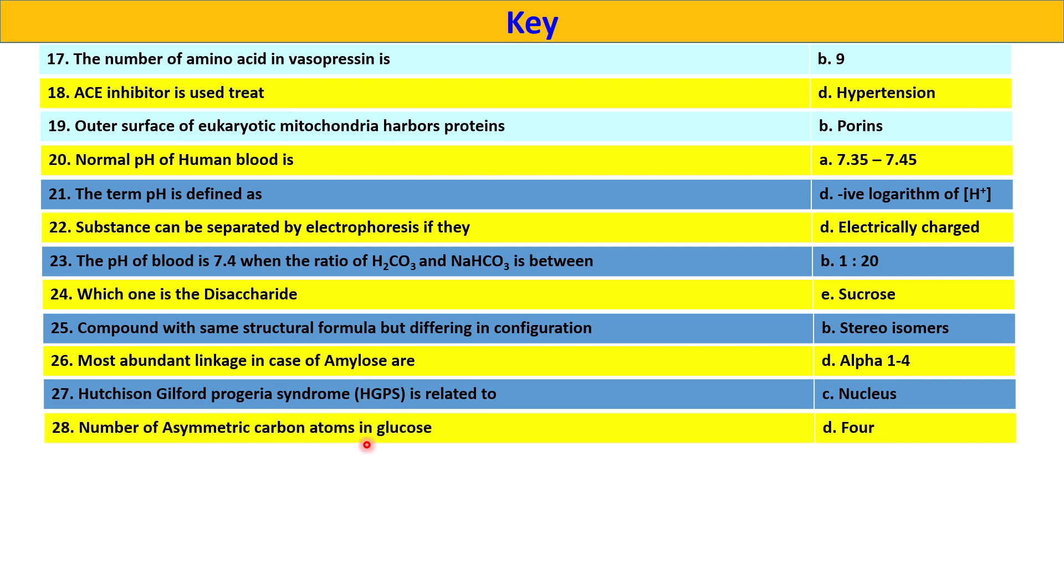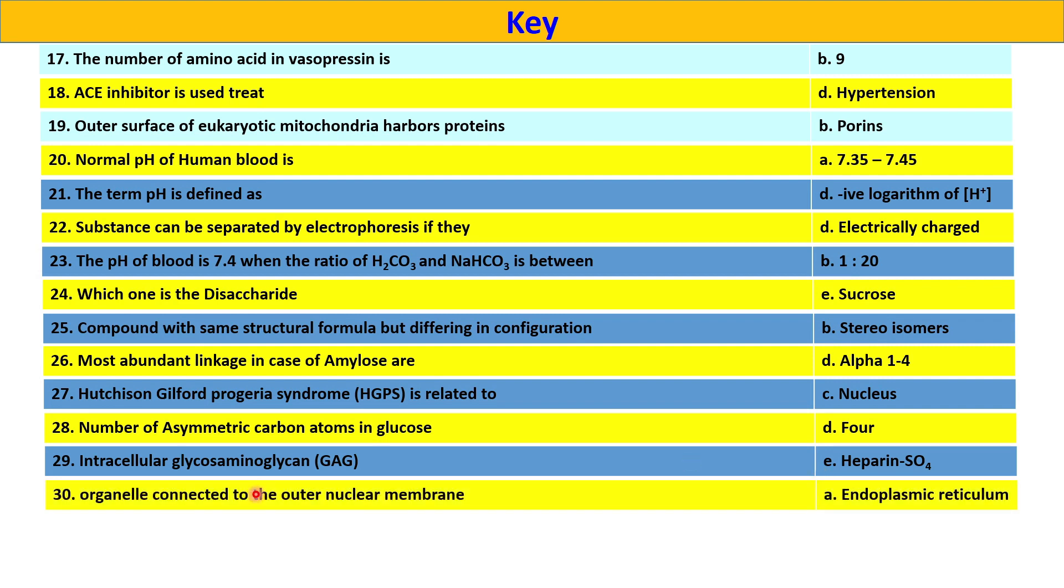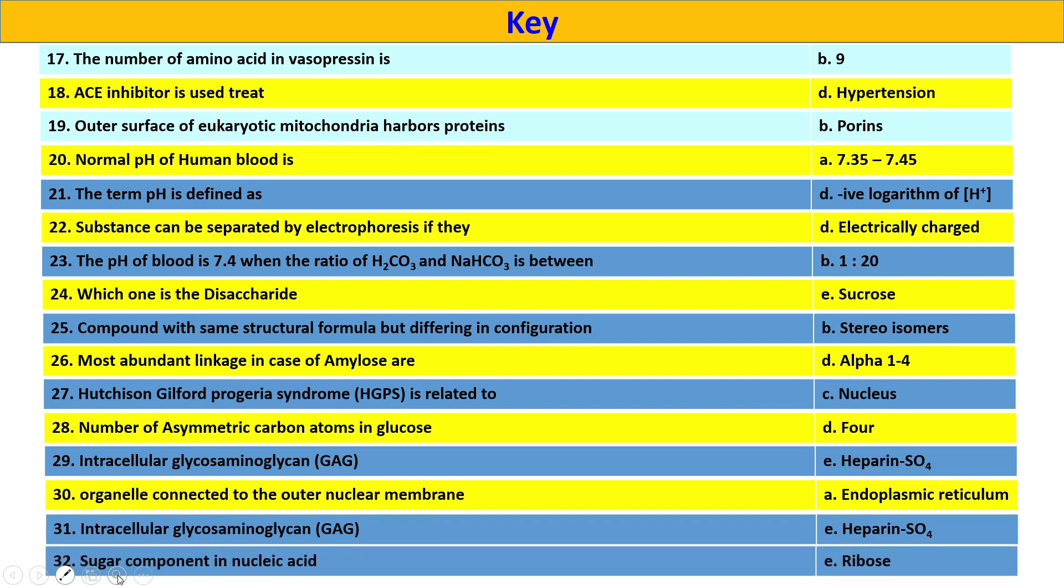Number of asymmetric carbon atoms in glucose is 4, option D. Intracellular glycosaminoglycan that is GAG, heparan sulfate, option E. Organelle connected to the outer nuclear membrane is endoplasmic reticulum option A. Question 31 is intracellular glycosaminoglycan GAG, option C heparan sulfate and question 32 sugar component in nucleic acid is ribose.